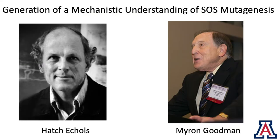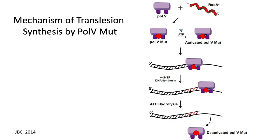Hatch Eccles and Myron Goodman come into play here, where they generated a mechanistic understanding of SOS mutagenesis. Here is a picture of Myron with his EMGS badge when he won the EMGS award. Hatch, of course, died way too early. Both of them are giants who made incredible contributions to the field. So here we have Pol V, which is UMUD prime. When RecA donates one molecule of RecA to UMUD prime and ATP binds, we now have an activated Pol V mutasome polymerase, the translesion polymerase, which can go past the damage. ATP hydrolysis then dissociates and deactivates that polymerase. That's SOS mutagenesis, originally proposed by Witkin and Radman.